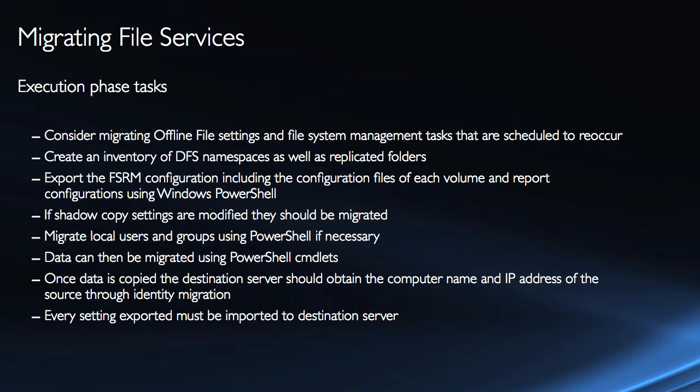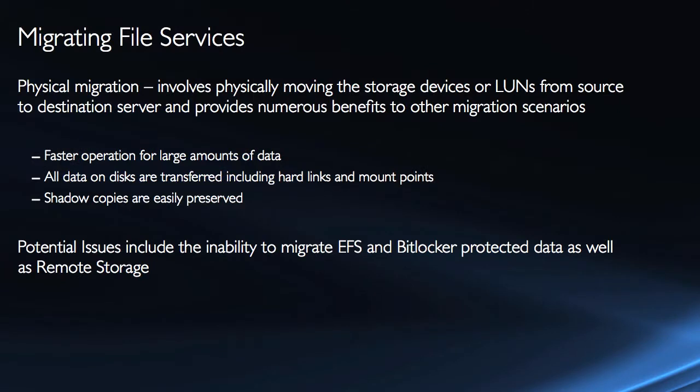Once data is copied over to the destination server, that server should obtain the computer name and IP address of the source through what's called identity migration. These are the individual steps and some of the configuration considerations that need to be taken into account. The Windows Server migration tools are doing a lot of this for us.